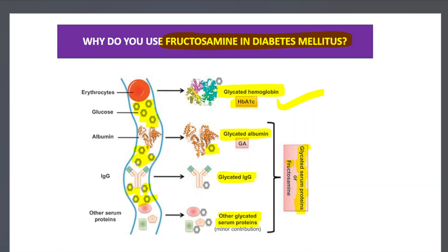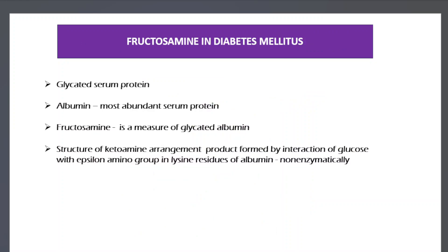All glycated serum proteins — excluding glycated hemoglobin — are collectively called serum glycated serum proteins, or fructosamine. Fructosamine is therefore a glycated serum protein, and since albumin is the most abundant serum protein, fructosamine can be considered a measure of glycated albumin.